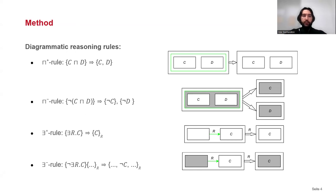The diagrammatic reasoning method that I propose includes a number of reasoning rules that are applied to logic graphs, and there are rules for intersection and existential restriction, and both for negated and asserted forms.